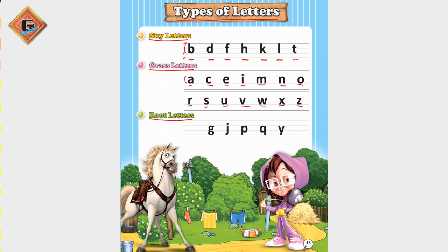The last type is root letters. Root letters are those letters which use the lower three lines — the second line, third line, and fourth line. Those that use the lower three lines are root letters.